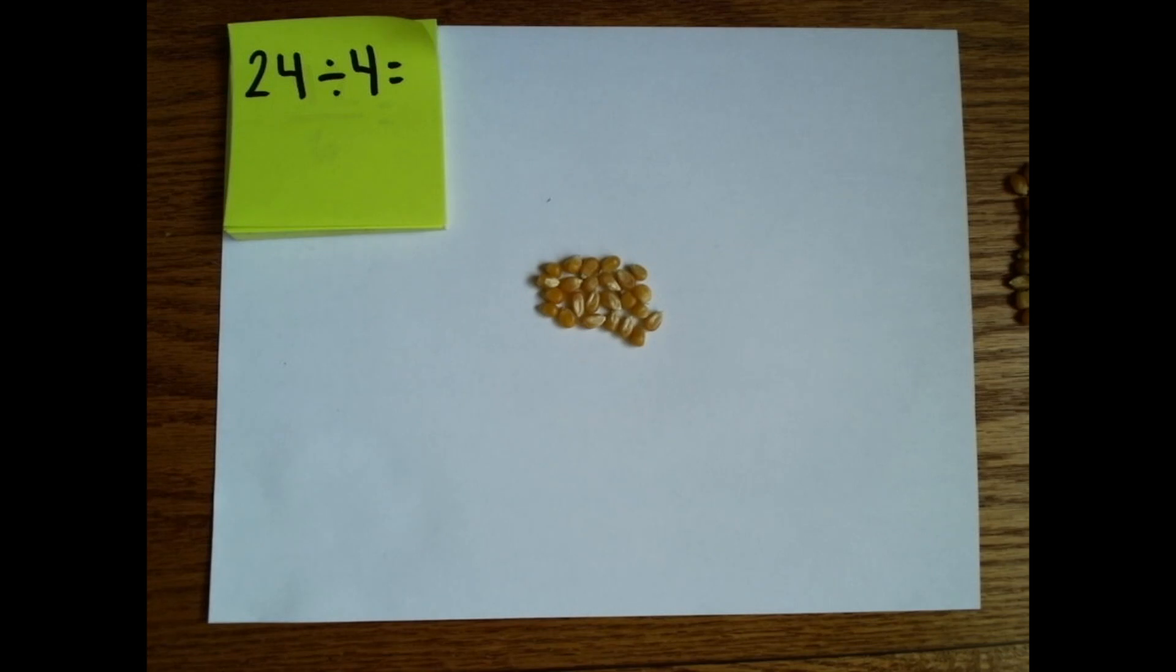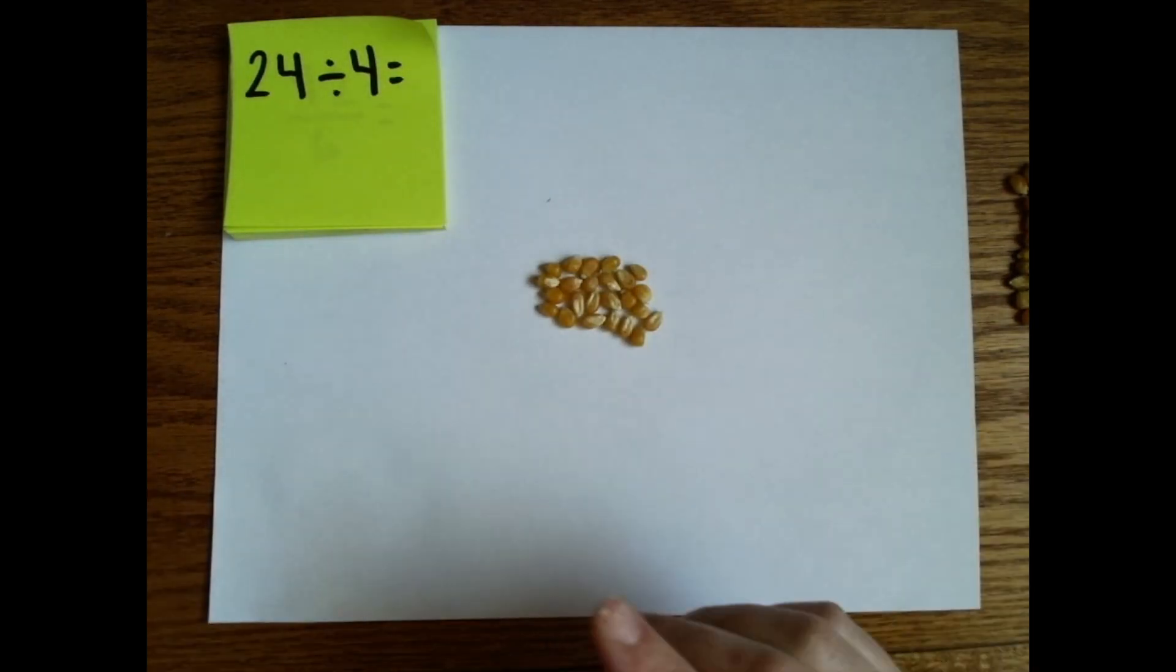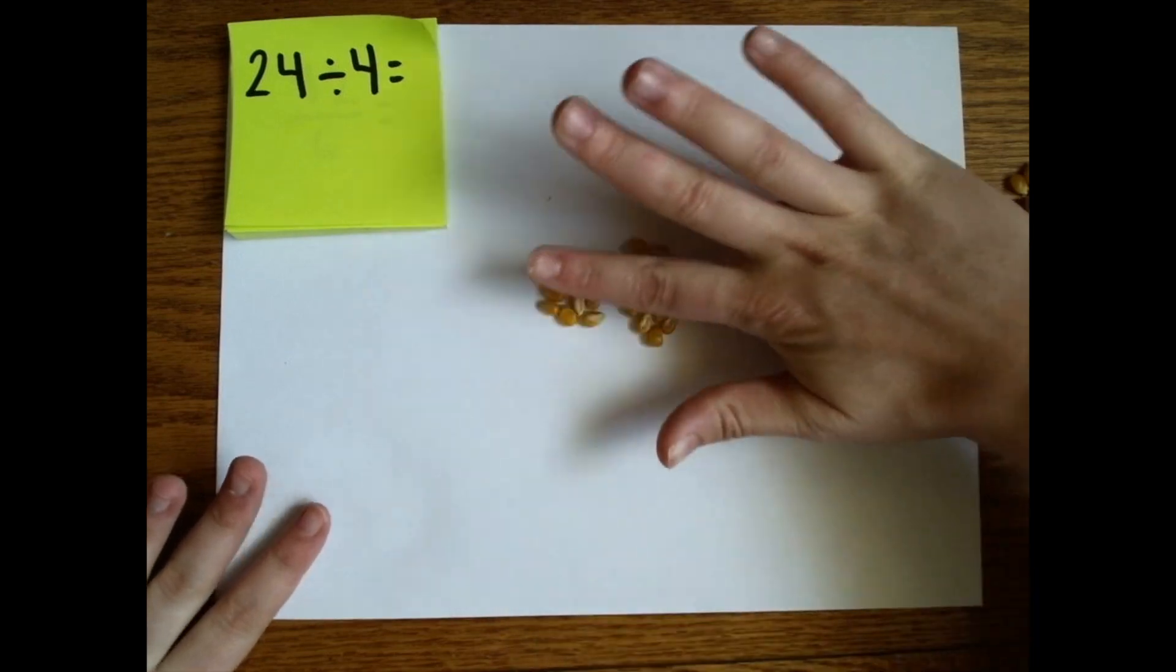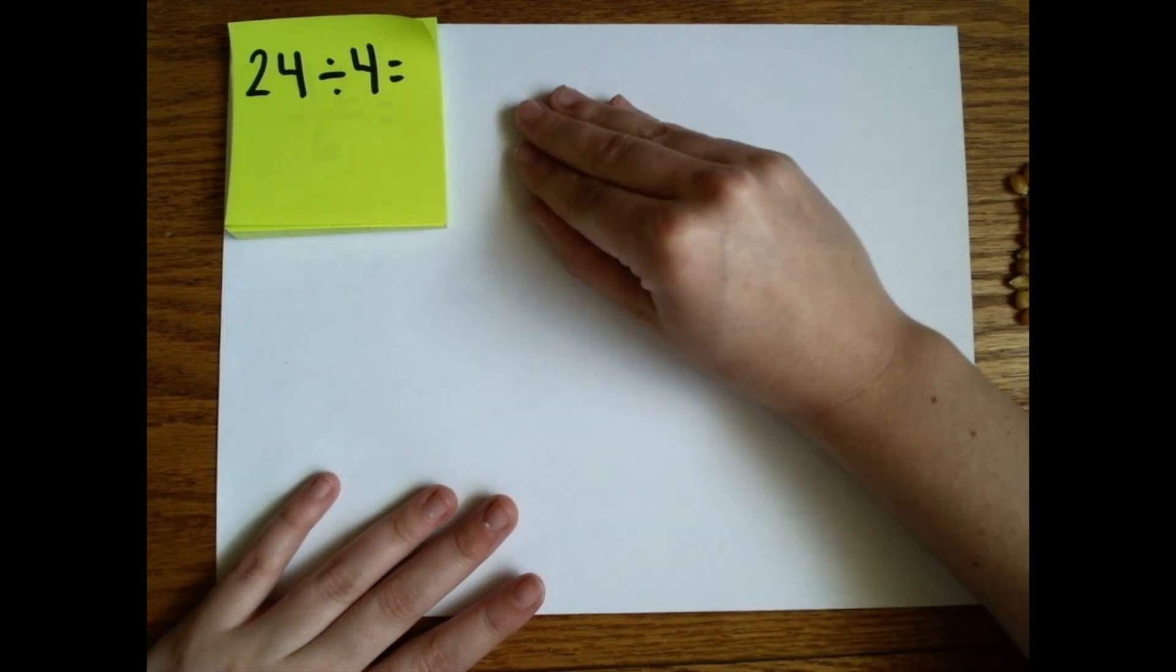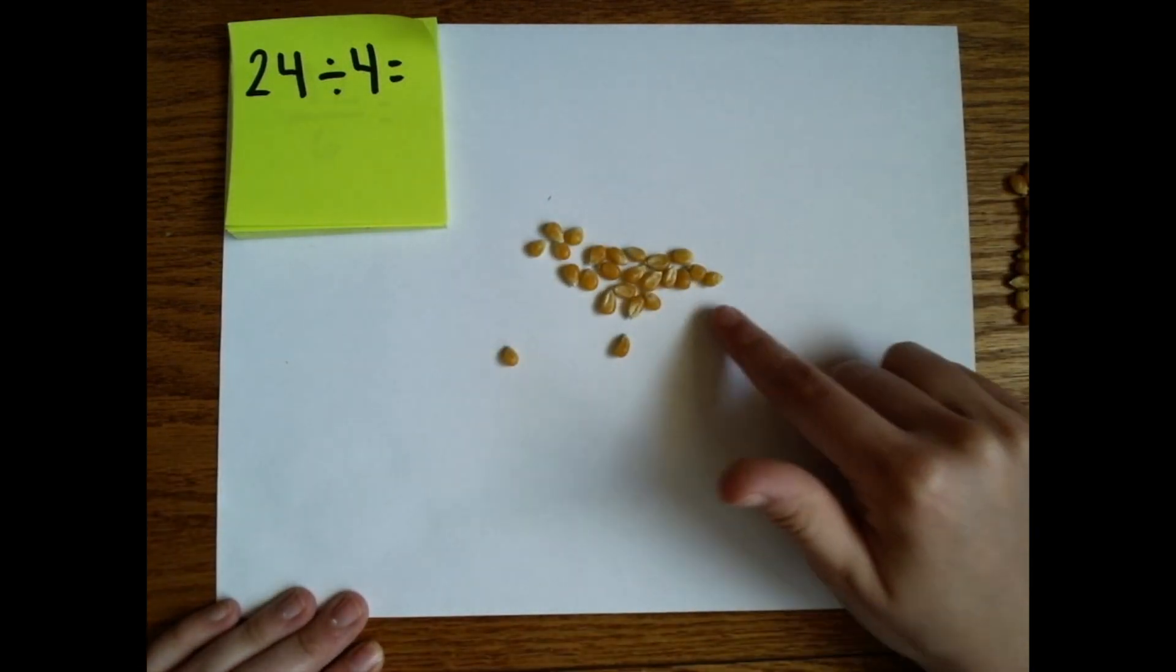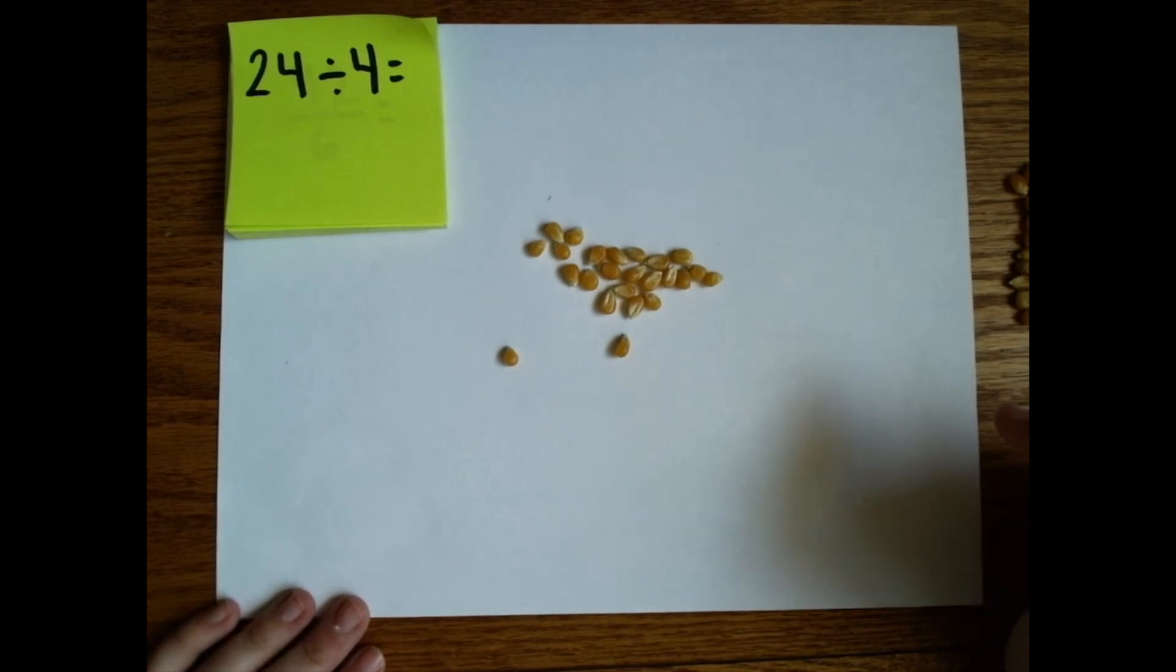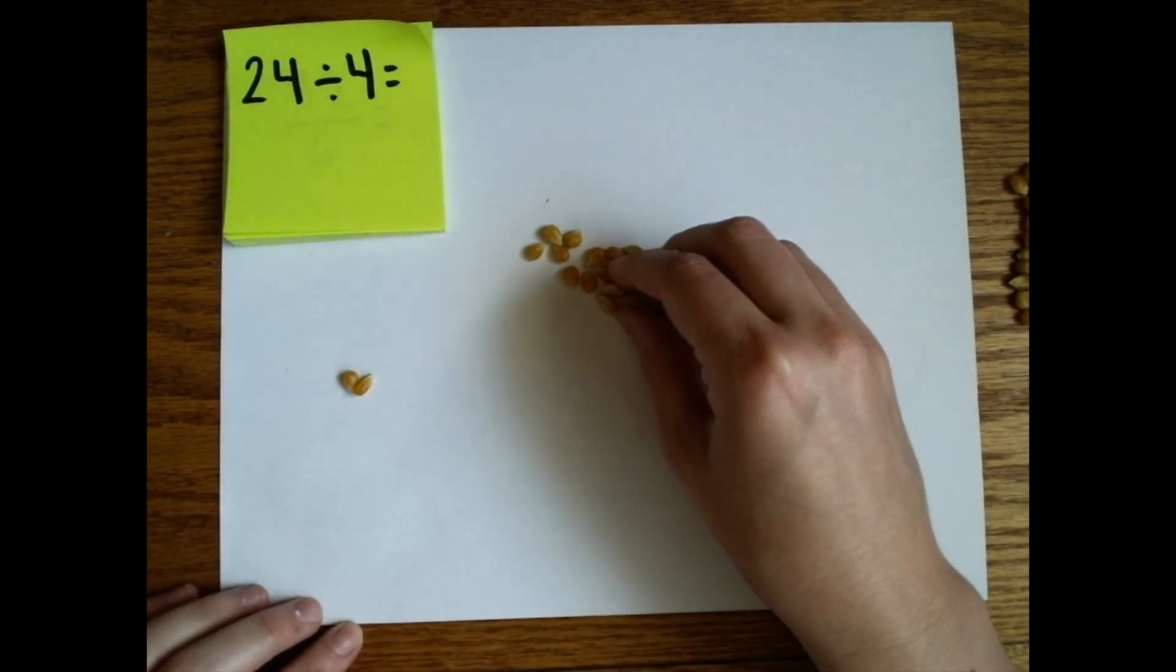Sometimes in my head, I like to make an estimate of what that quotient might be, what it's going to equal to at the end. Just by estimating if I were to split it in half and half again, I think it's going to be about five or six. Okay, so let's start. I'm going to imagine four circles on my paper. You can draw them if you want to. I'm just not going to so I don't waste paper. So I'm just going to start sorting them.